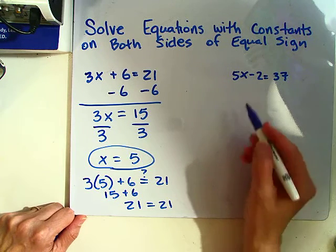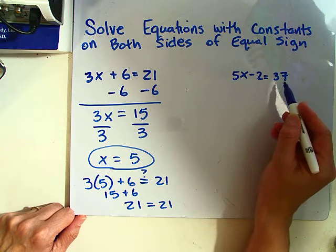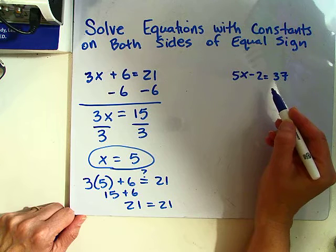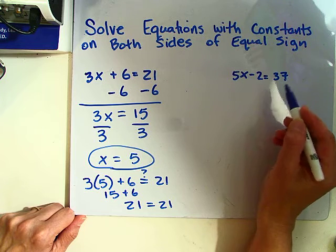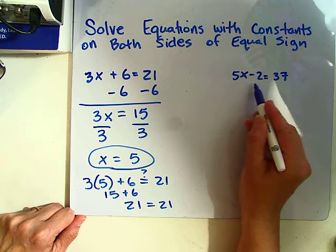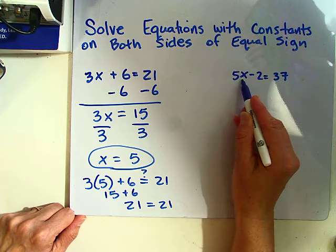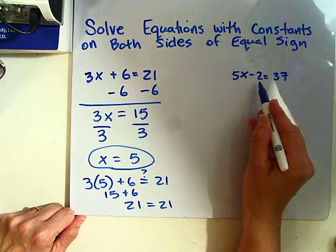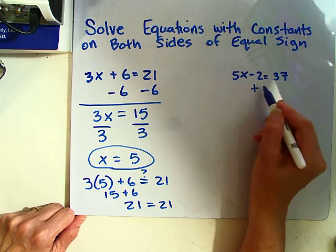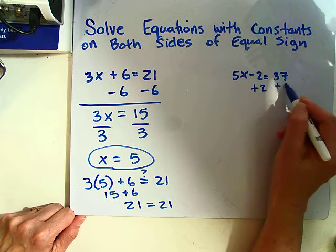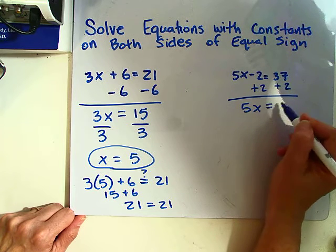Here's another example where we have constants on both sides. If you want to pause the video and try this before I work it out, go ahead. Here I have 5x minus 2 equals 37. I'm going to use the addition property of equality and add 2 to both sides, and I get 5x equals 39.